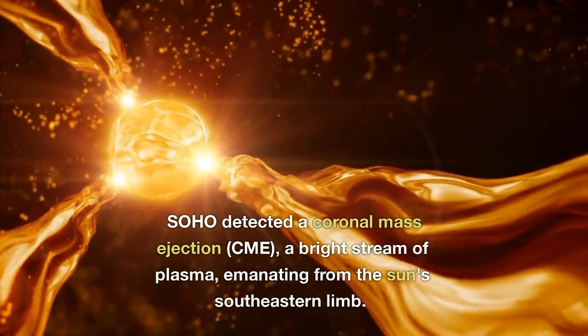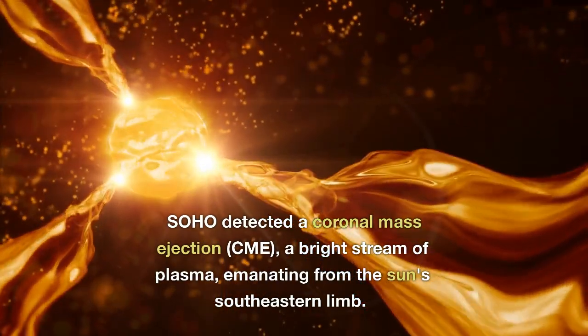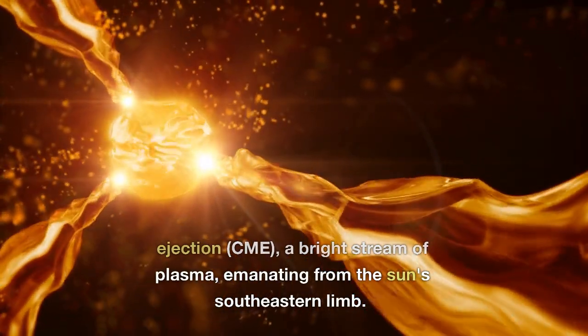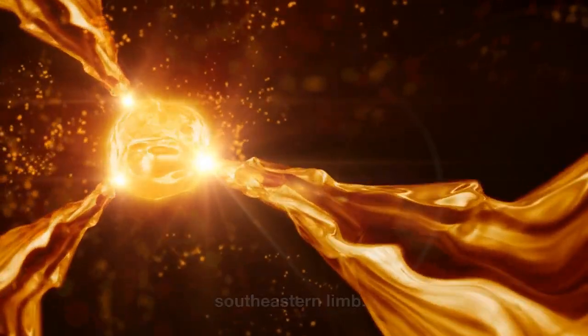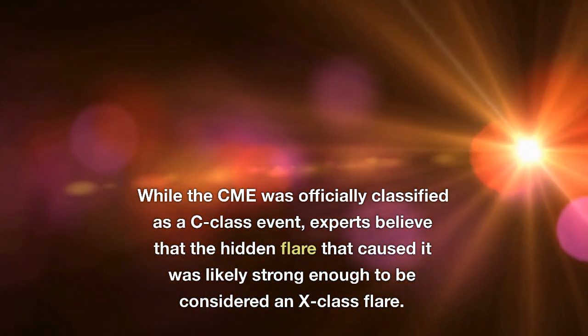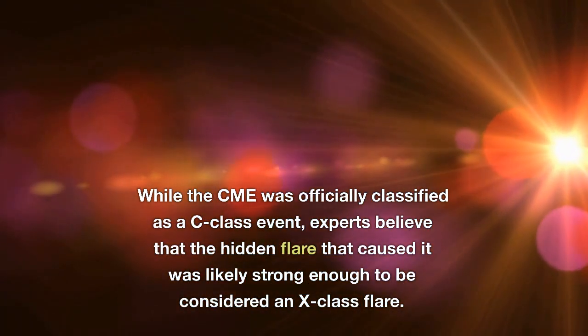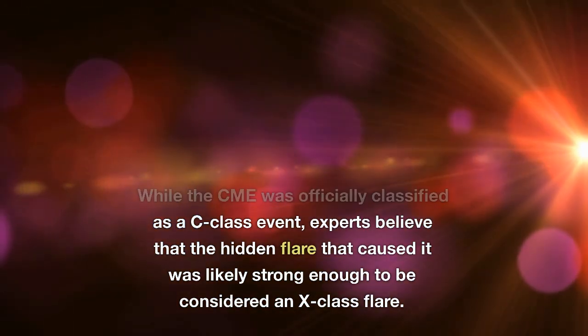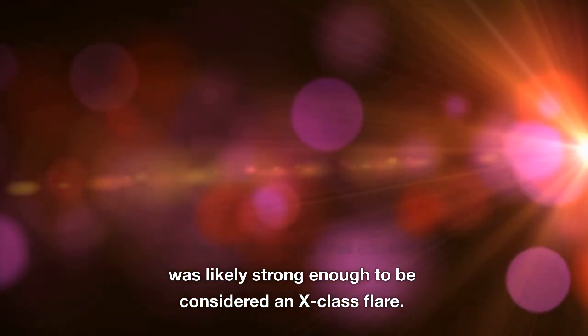SOHO detected a coronal mass ejection, CME, a bright stream of plasma, emanating from the Sun's southeastern limb. While the CME was officially classified as a C-Class event, experts believe that the hidden flare that caused it was likely strong enough to be considered an X-Class flare.